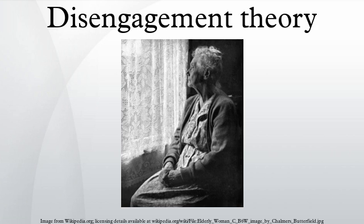Postulates. Cumming and Henry provided the following nine postulates for the process of disengagement. Postulate 1: everyone expects death, and one's abilities will likely deteriorate over time. As a result, every person will lose ties to others in his or her society.